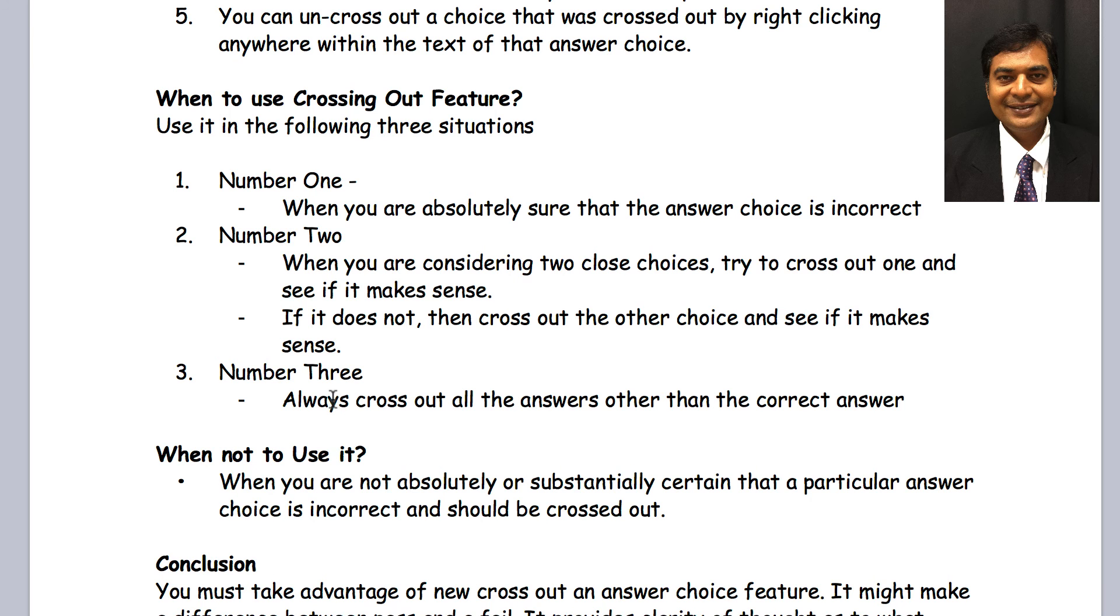What I suggest in number three is that always cross out answers other than the correct answer. In the end, you should have three or four crossed out answers. So, if they're A, B, C, D and E, you should have four crossed out, only one remaining. If they're A, B, C, D, you cross out three and have only one remaining as the right answer and that would serve you well.